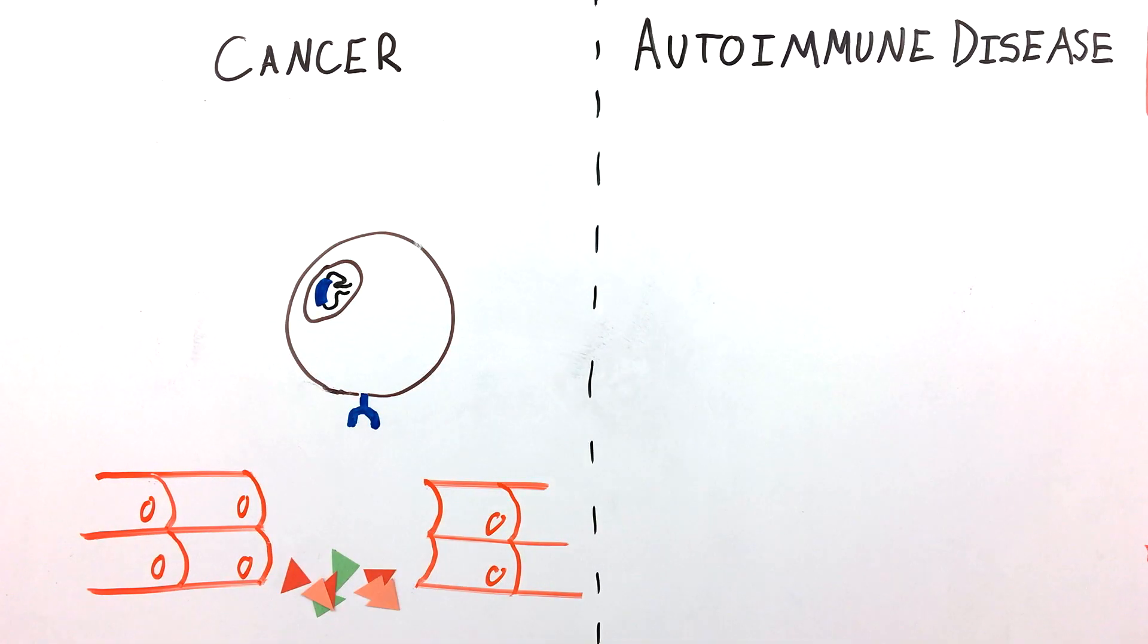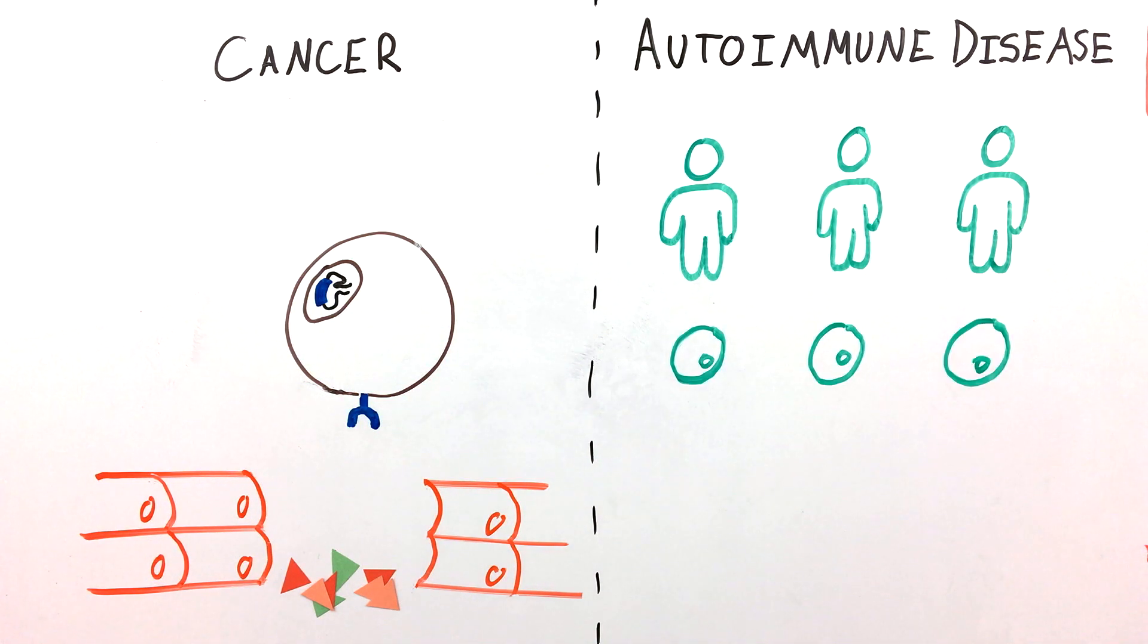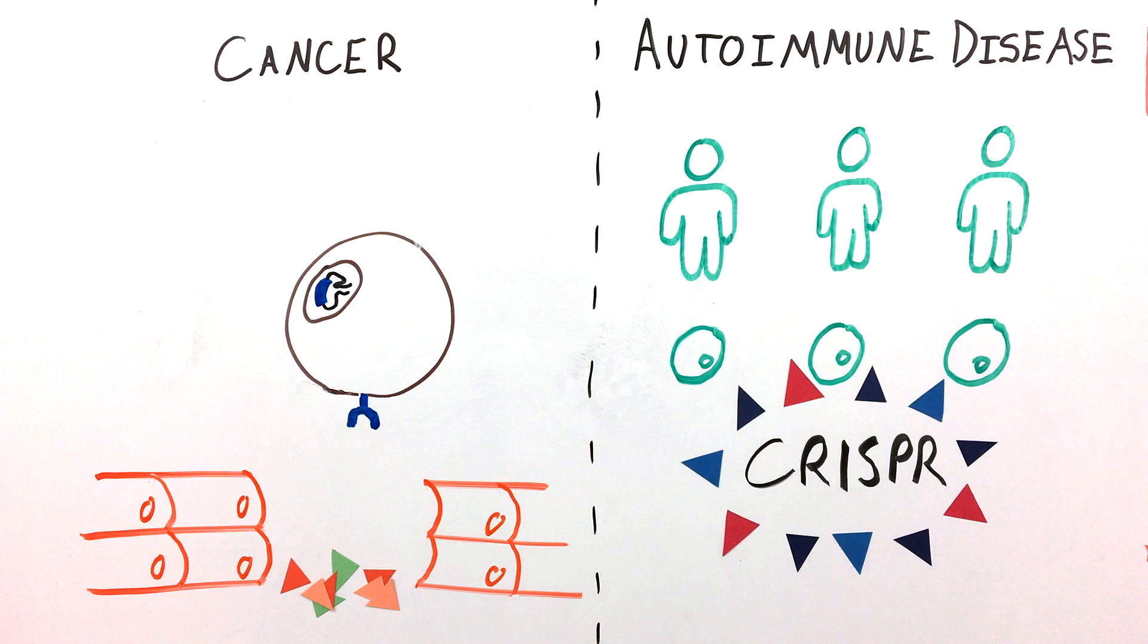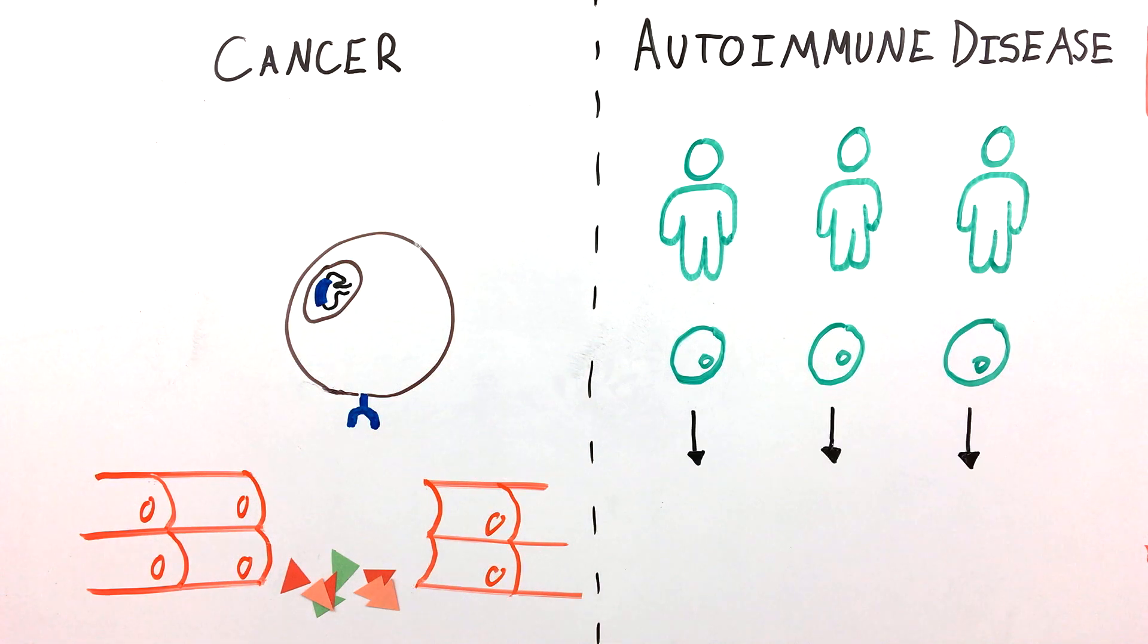A scientist also used this new method to repair a specific genetic mutation inside T-cells that were removed from siblings with a rare autoimmune disease. This proof of concept could be the first step towards a new treatment for such patients.